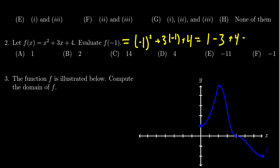And so we get 1 minus 3, which is negative 2 plus 4. We see that the response would be positive 2, and hence the correct answer is B.